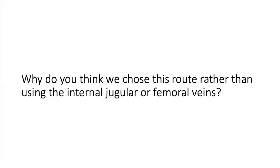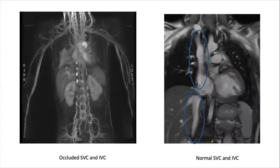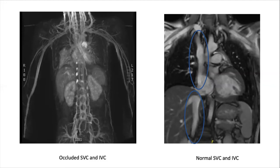The answer is that this child had poor central access due to previous multiple lines. Every time you meddle with a vein there's a chance that it will block off and not be available for use next time. On the left we have an MR venogram of the patient and on the right a venogram of a normal patient. You can see on the right a normal SVC and IVC, but on the left they are absent, i.e. they have occluded. There are also lots of collateral vessels on the left, so even if we had managed to get into the internal jugular or femoral veins we wouldn't have been able to get into the central veins.